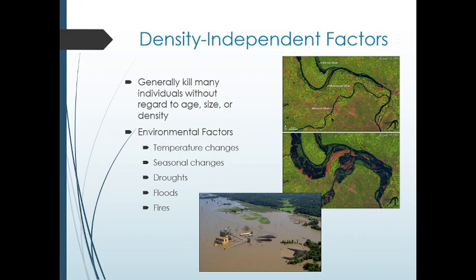Density-independent factors are different in that they kill individuals without regard to population size. It doesn't really matter how many deer are living along the Mississippi River when it floods. Here you can see where the flood is — this is the city of St. Louis — and it's a big flood. It doesn't matter how many trees are living in the floodplain before the flood; when that river floods, it's going to kill a lot of those trees. This could be temperature — if you get negative 50 below, a lot of the squirrels are going to die whether there are lots of squirrels in the area or just a few. Droughts, floods, and fires are all examples of density-independent factors.